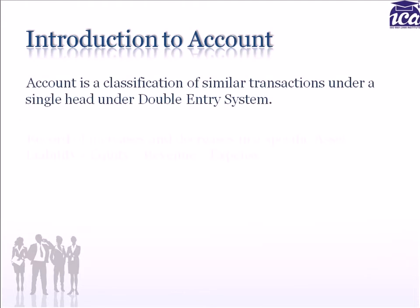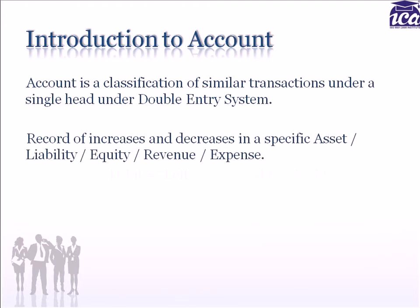We learnt that the double entry system classifies transactions into accounts. So, what is an account? An account is a classification of similar transactions under a single head. All transactions relating to the same activity that have taken place during a particular period are recorded here. An account keeps a record of increases and decreases in a specific asset, liability, equity, revenue, or expense.